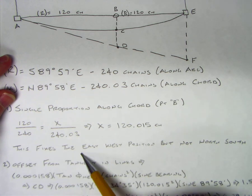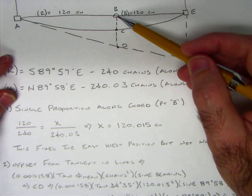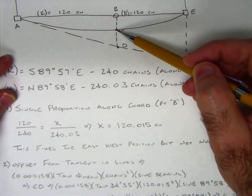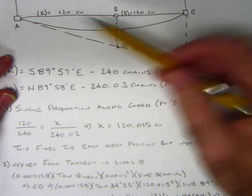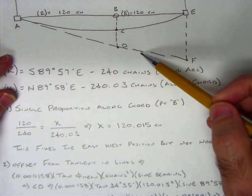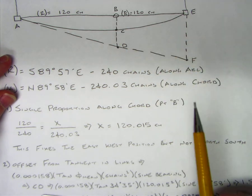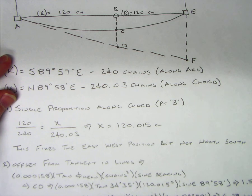This fixes the east-west position but not north-south position because that's just on the chord—we need to be on the arc. We're going to use the method of tangents and calculate some offsets, then use similar triangles to finish the solution.